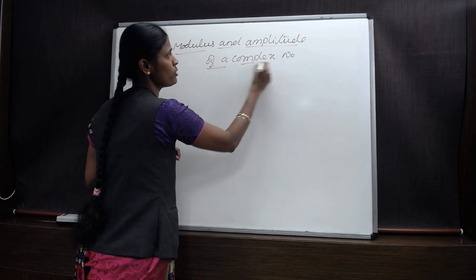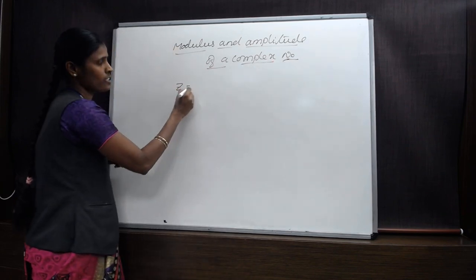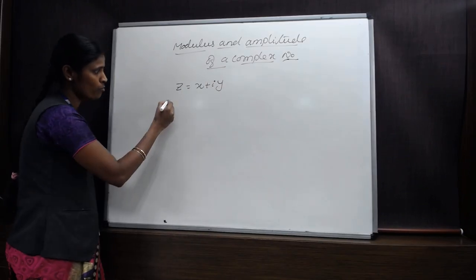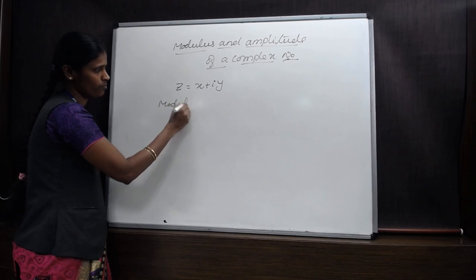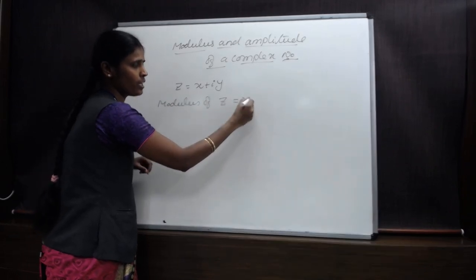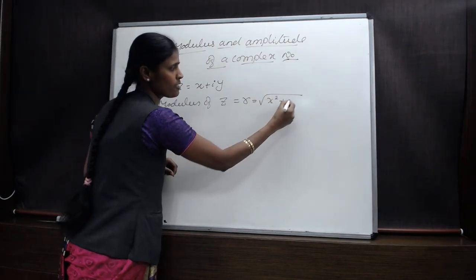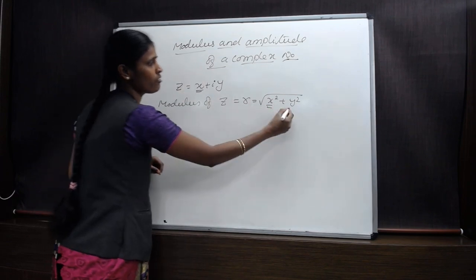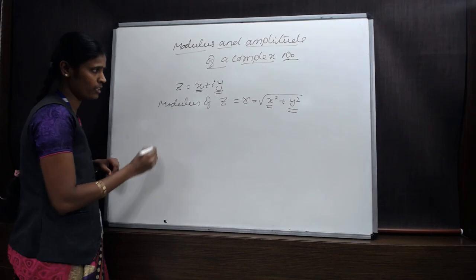Modulus and amplitude of a complex number. Let z = x + iy be a complex number. Modulus of z is represented by r and is defined as r = √(x² + y²), where x is the real part and y is the imaginary part of the complex number.